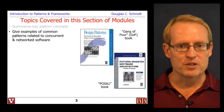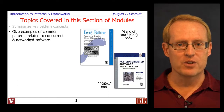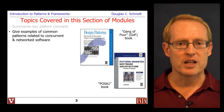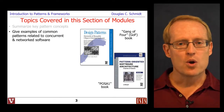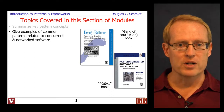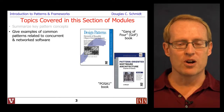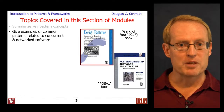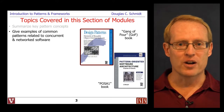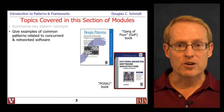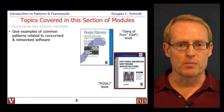We're going to cover several dozen patterns in the course. To start out with, I'd like to give you a flavor of four patterns commonly used in concurrent and network software systems. We'll be focusing on patterns from a pair of books that form the classic literature in the field: Design Patterns: Elements of Reusable Object-Oriented Software, sometimes called the Gang of Four or GoF book, as well as Pattern-Oriented Software Architecture: A System of Patterns, sometimes known as the POSA 1 book.